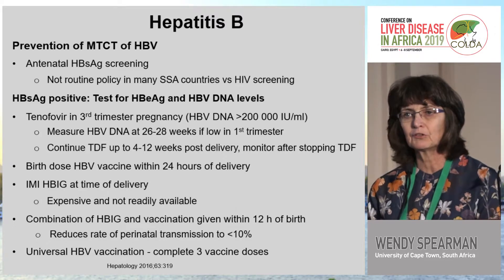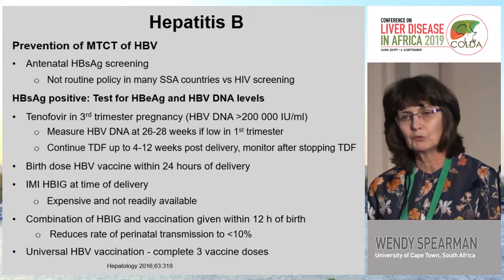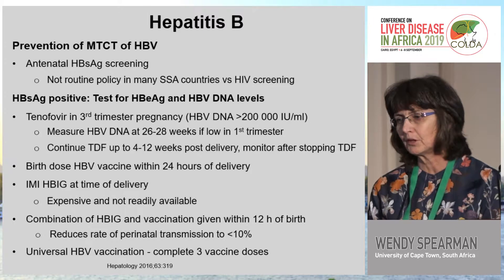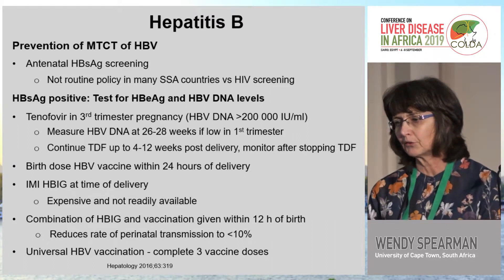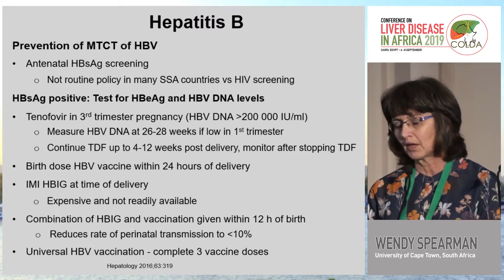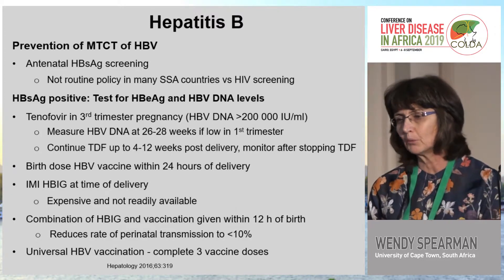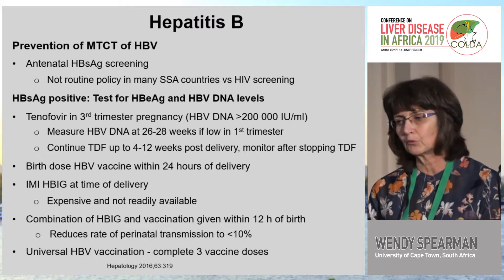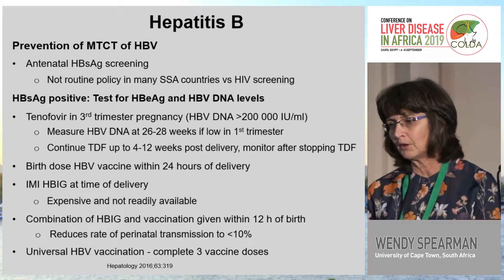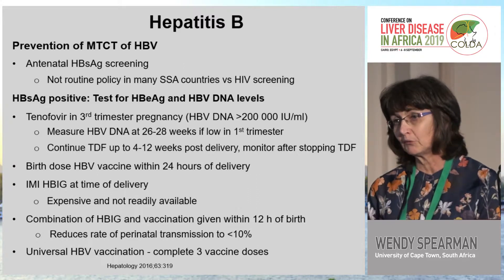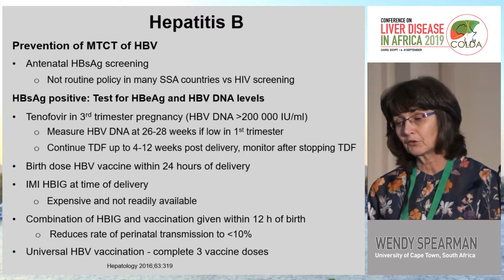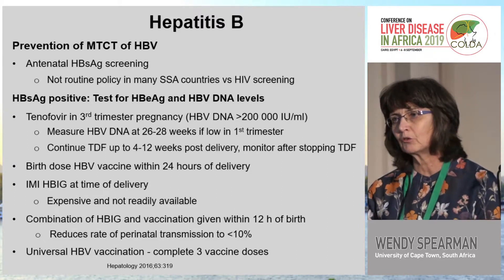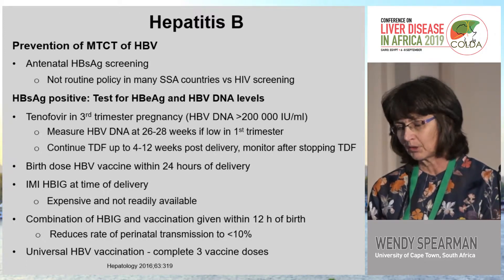To prevent transmission, all women should be screened for surface antigen — this should be routine policy as with HIV screening. If surface antigen positive, test for e-antigen and DNA levels. In our setting where access to HBIG is very poor, we need to look at the role of tenofovir in the third trimester. At 26 to 28 weeks, viral load should be checked and tenofovir implemented if indicated. This can be continued up to 12 weeks post-delivery, with monitoring after cessation as ALT flares can occur. The birth dose must be given within 24 hours, ideally within 12 hours. The combination of HBIG and the birth dose vaccine has decreased perinatal transmission to less than 10%, but the full three-dose vaccine series following the birth dose is essential to ensure immunity.